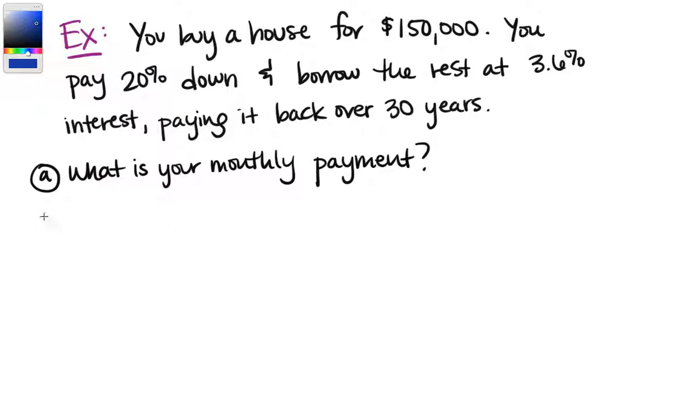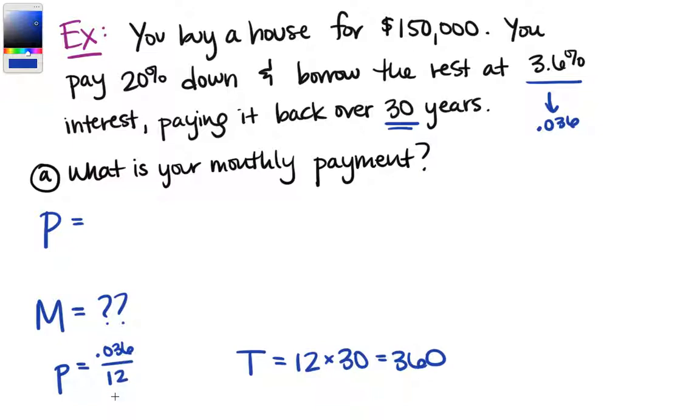So first let's think about our variables. We have big P, we have M, we have little p, and we have T. Monthly payment is what we're looking for. We know we're paying this back over 30 years, so T is 12 payments for each of those 30 years which comes out to 360. Our periodic interest rate, 3.6% interest, we can write that as a fraction, 0.036, and it's divided over 12 compounding periods every year. So we can write that as 0.003.